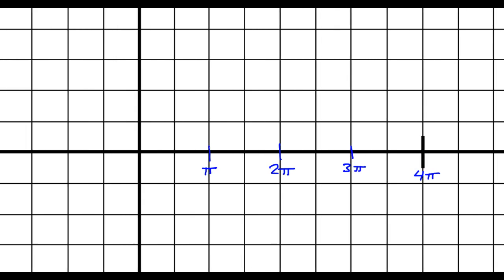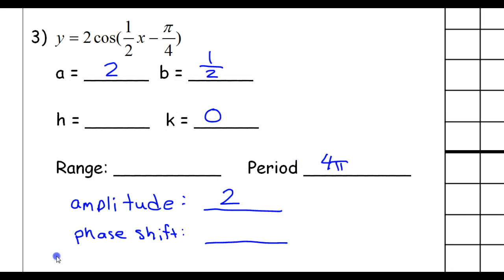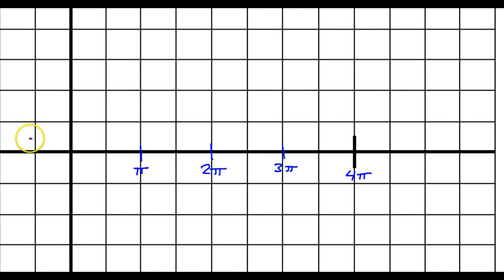The cosine function starts off high, amplitude 2. So, this is going to be my midline. For my skeleton, I'm going to start off above. And then I'm going to go to the midline. And then I'm going to go below. Then back to the midline. And then above again.